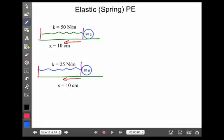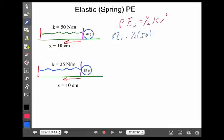Here I have two springs: one with an elastic constant of 50 newtons per meter, and the other with 25 newtons per meter. In each case I'm going to compress them back 10 centimeters. Spring potential energy equals one-half kx squared. For the first one: one-half times 50 times (0.1 meters) squared, which gives us 0.25 joules. All energies are measured in joules.